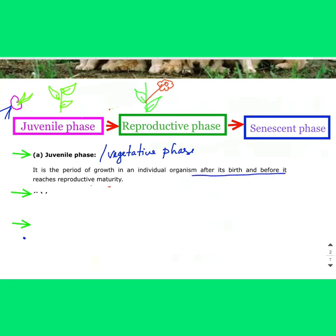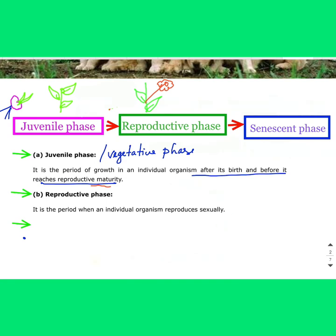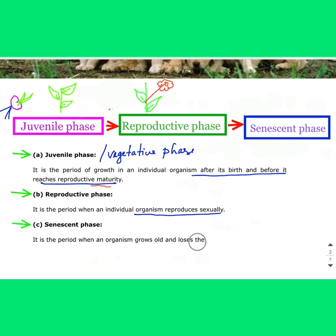The second phase is the reproductive phase — the period when an individual organism reproduces sexually. Plants start to produce flowers, for example. Then the senescent phase: it is the period when an organism grows old and loses the ability to reproduce.